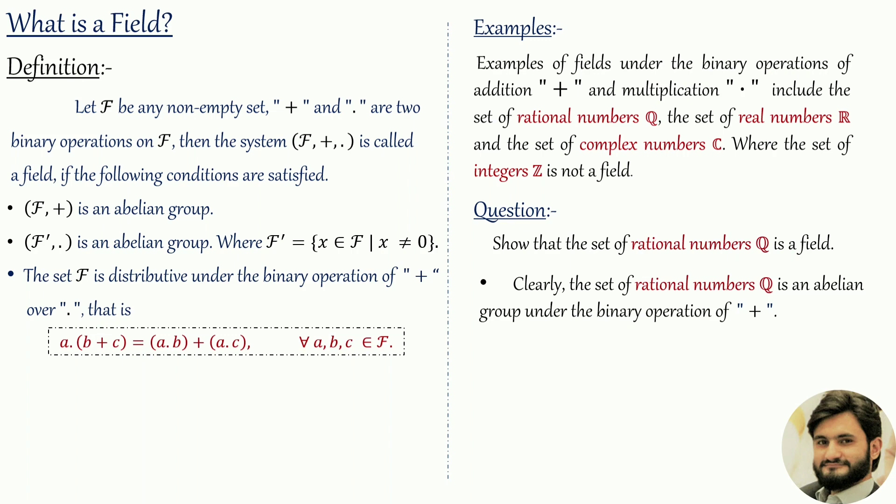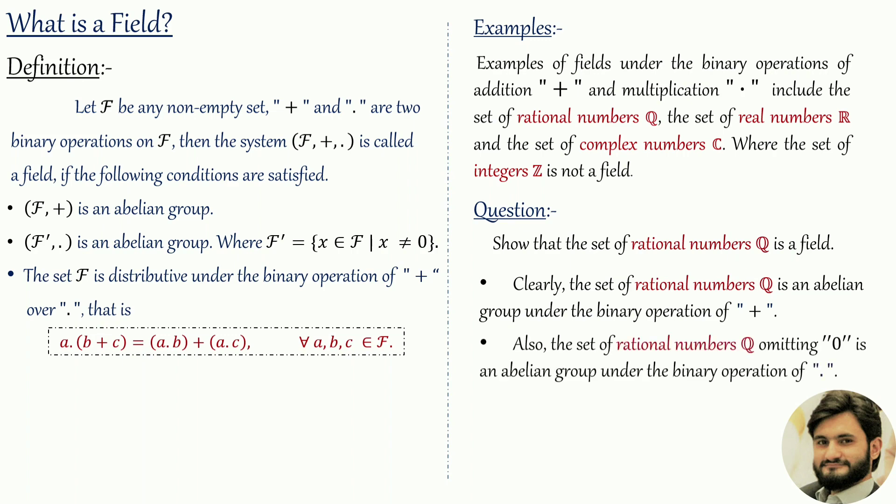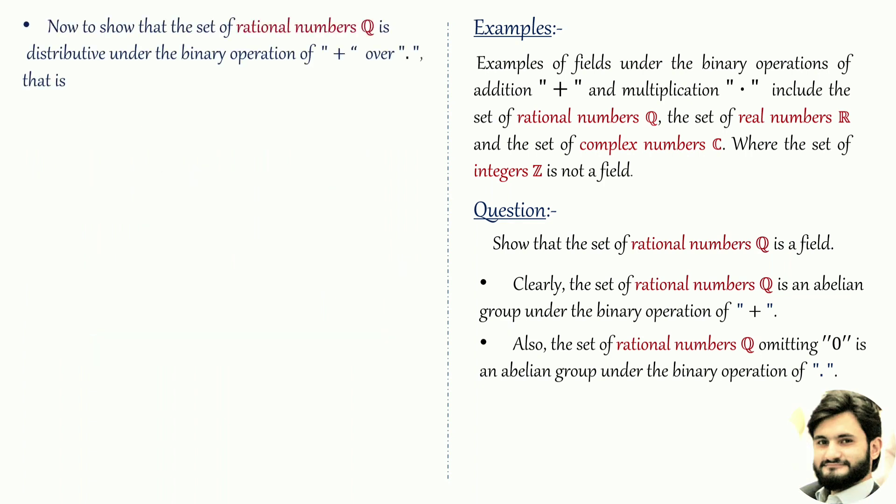Clearly, the set of rational numbers Q is an abelian group under the binary operation of addition — it satisfies all 5 conditions of an abelian group. Also, the set of rational numbers omitting zero: since zero is the additive identity in Q, removing it gives the set Q', which is an abelian group under the binary operation of multiplication.